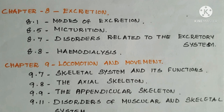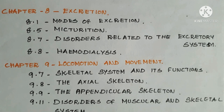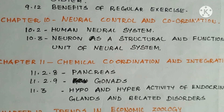Chapter 8: Excretion — 8.1 Modes of Excretion, 8.5 Micturition, 8.7 Disorders Related to the Excretory System, 8.8 Hemodialysis. Chapter 9: Locomotion and Movement — 9.7 Skeletal System and Its Functions, 9.8 The Axial Skeleton, 9.9 The Appendicular Skeleton, 9.11 Disorders of Muscular and Skeletal System.